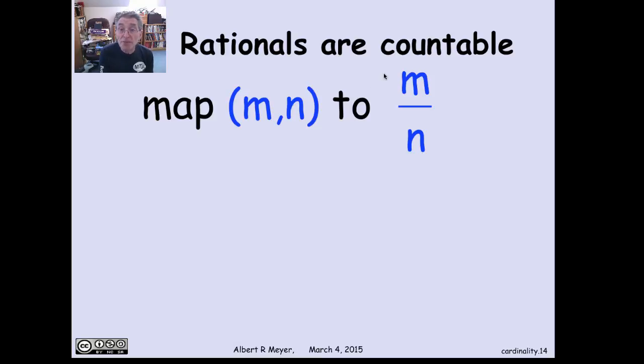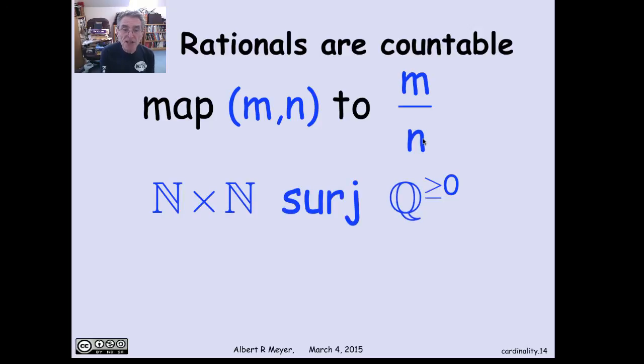That gives us a nice surjective mapping, because every rational number can be expressed as m over n, at least every non-negative rational number. What we have is a surjection from the pairs of non-negative integers, which we know is countable, onto the non-negative rational numbers, quotients of integers, which means that the rationals, sure enough, are countable, even though they seem to be spread out all over the line.